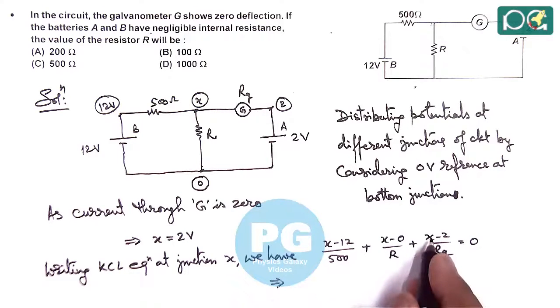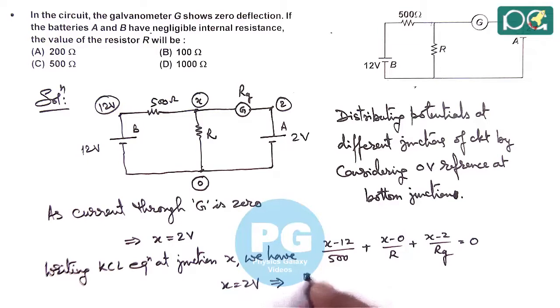Simplifying and substituting X = 2 volts: (2 - 12)/500 + 2/R = 0, which gives us -10/500 + 2/R = 0, and therefore R = 100 ohms.